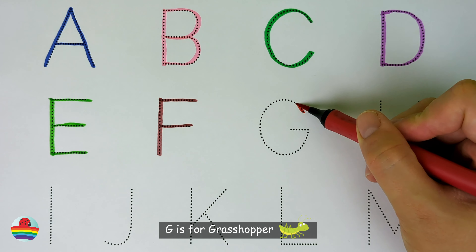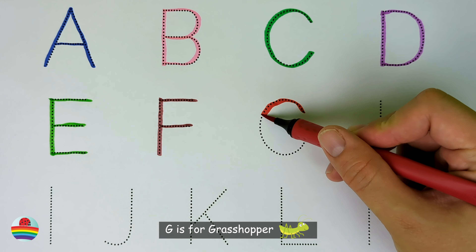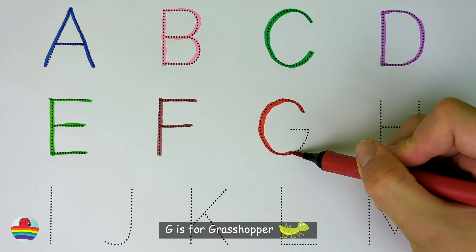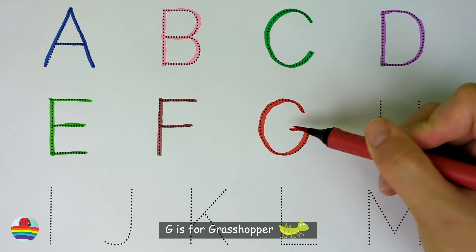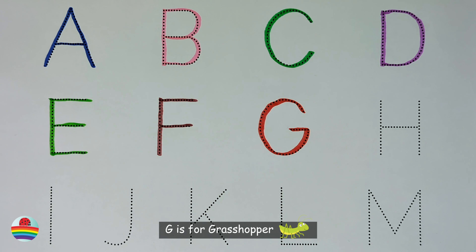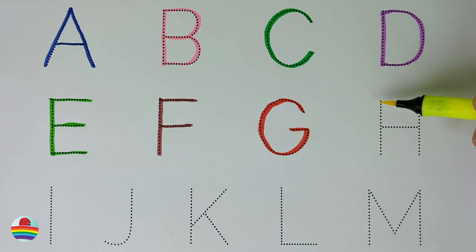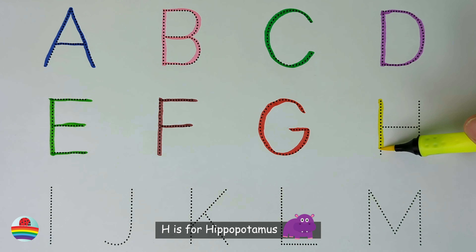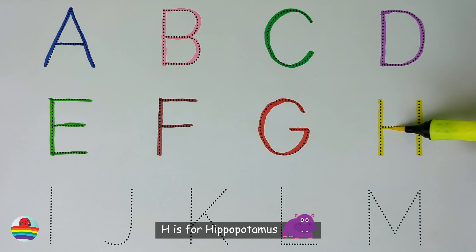G. G is for grasshopper. G. H. H is for hippopotamus. H.